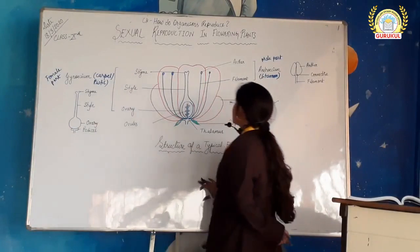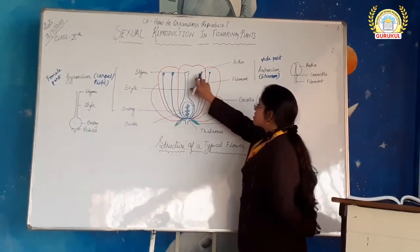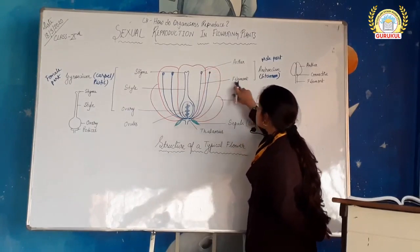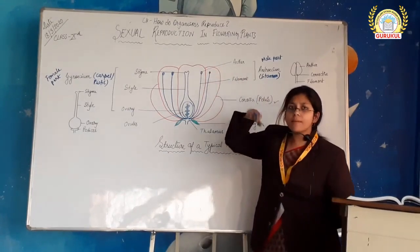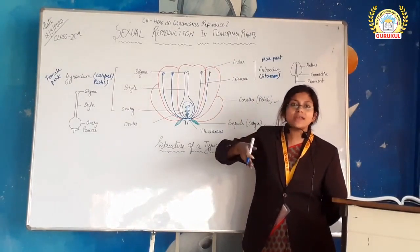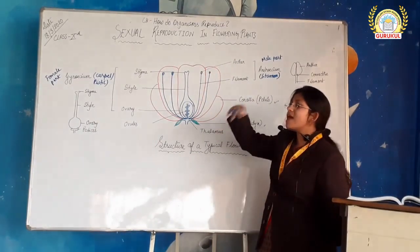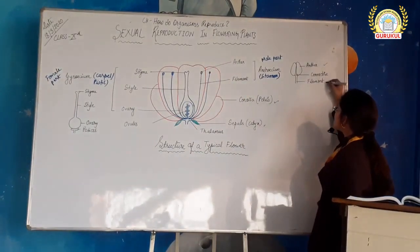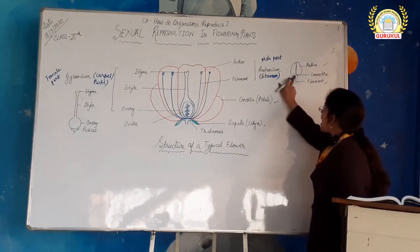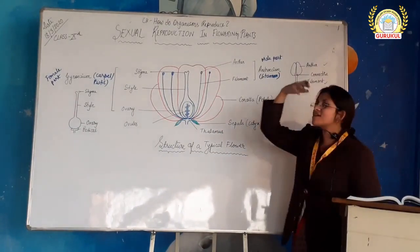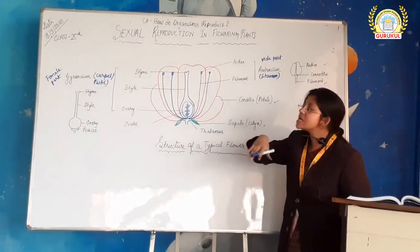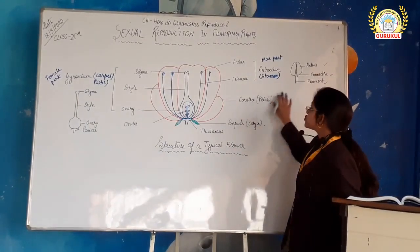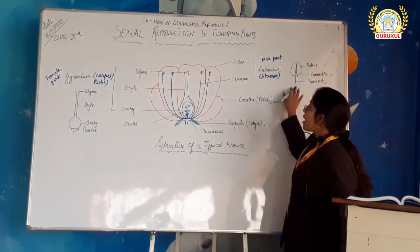Now let us get into the detailed structure of androecium and gynoecium. In stamen we have the anther — this is the upper part — and this stick-like structure is known as the filament. For ease of understanding I have elaborated the diagram. This is the anther, this is the filament, and this portion which connects the anther with the filament is known as the connective. That is the structure of androecium.